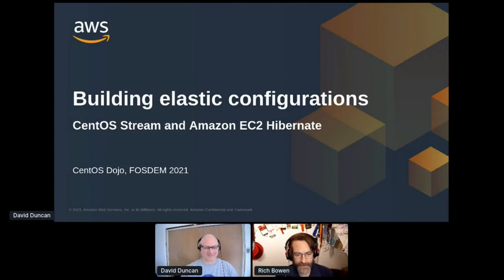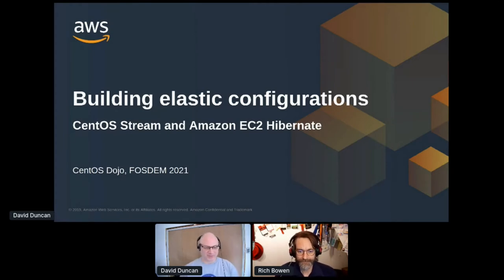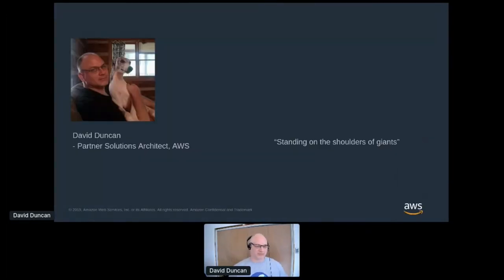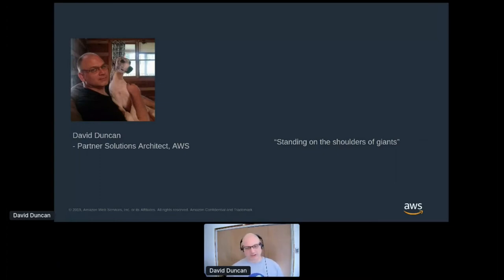I'm delighted to present David Duncan. He'll be talking about building elastic configurations. Thanks, Rich. This is super exciting for me to be here and to be a part of the CentOS community. I'm David Duncan, a Partner Solutions Architect at Amazon Web Services. I work on lots of projects related to our operating system partners, specializing in the Linux and Unix space, spending most of my time on solutions related to the community around Red Hat, Fedora, and CentOS.